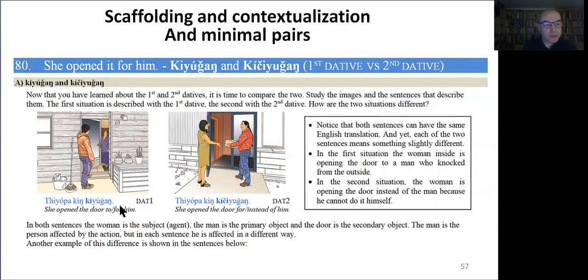So here the hope is that they will observe that in both sentences the woman is the subject, the man is the primary object, and the door is the secondary object. The man is the person affected by the action but in each sentence he is affected in a different way. Here he's knocking on the door because he wants to visit with her or talk to her. She opens the door for him. Here he cannot open the door for himself because he's carrying a heavy object, so she opens the door in his stead, on his behalf. In English we can say she opened the door for him in both cases, but in Lakota we can make and we often do make this type of distinction.